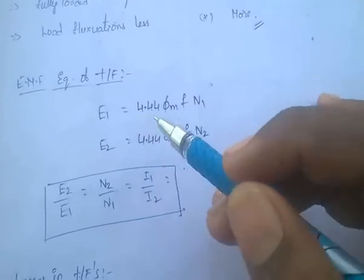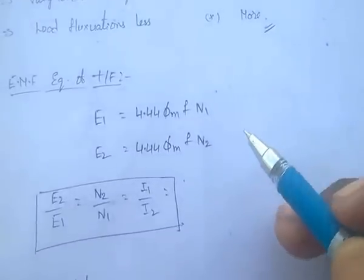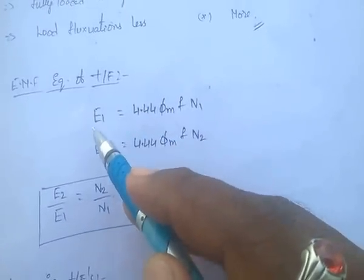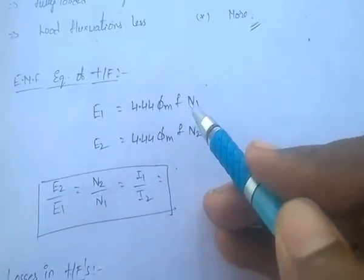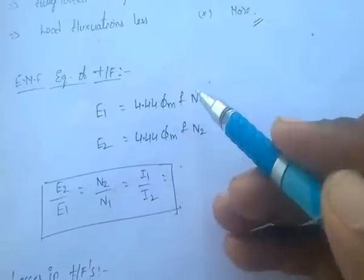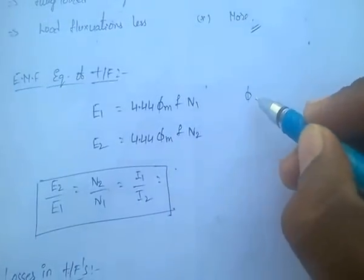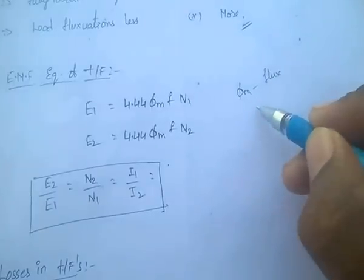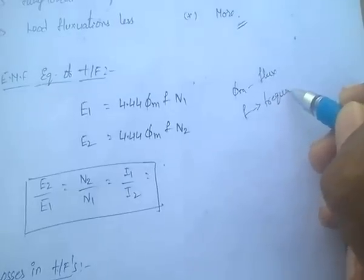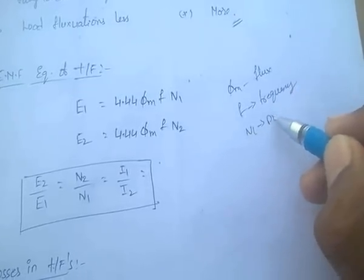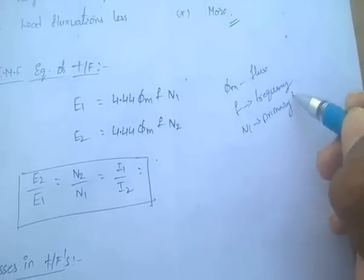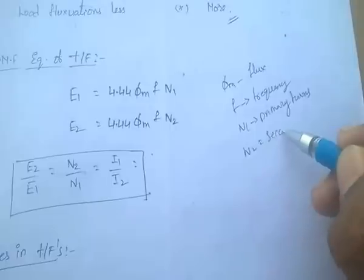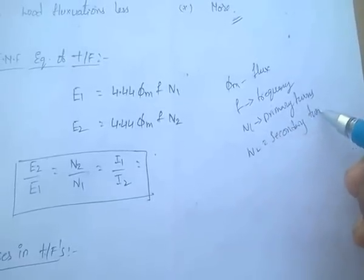Coming to the EMF equation of a transformer: the EMF induced in primary winding, E1, is equal to 4.44 × φm × F × N1, where φm is the maximum flux, F is the frequency, and N1 is the primary turns. N2 is the secondary turns.